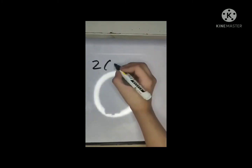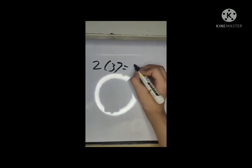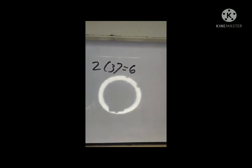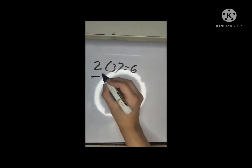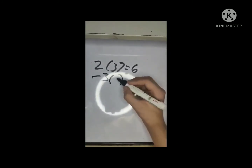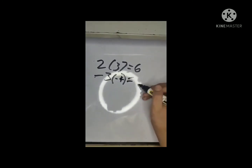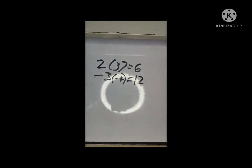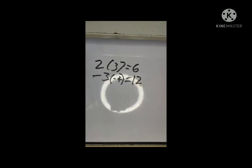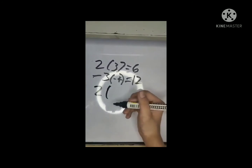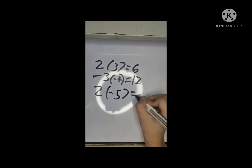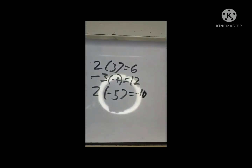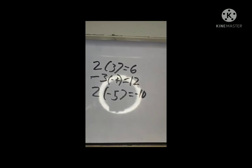Let's have a first sample. Positive 2 times positive 3 equals positive 6. The product of two positive integers is a positive integer. Let's try another one: negative 3 times negative 4 equals positive 12. The product of two negative integers is a positive integer. Let's try different samples: positive 2 times negative 5 equals negative 10. The product of two integers with different signs is a negative integer. That's all. Thank you.